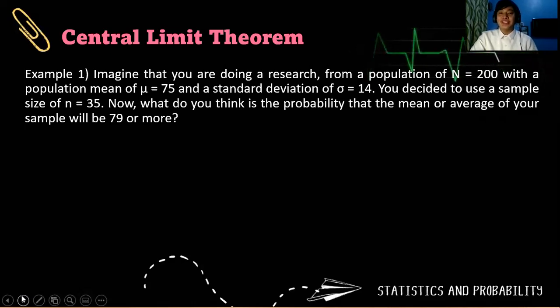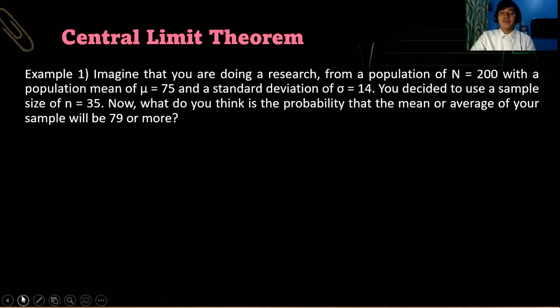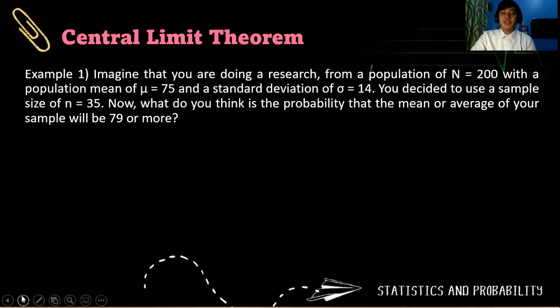Now, what do you think is the probability that the mean or average of your sample will be 79 or more? To answer that question, let us write first the given. This is how you are going to show your solutions on your outputs.